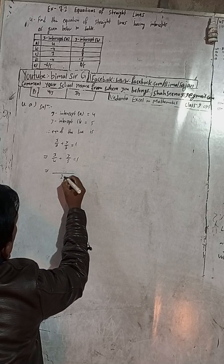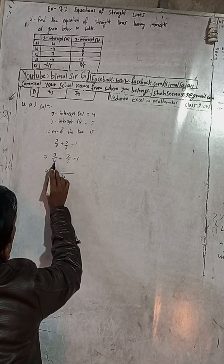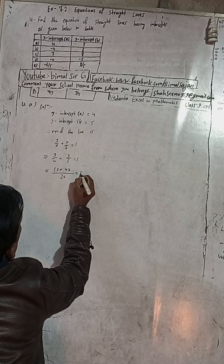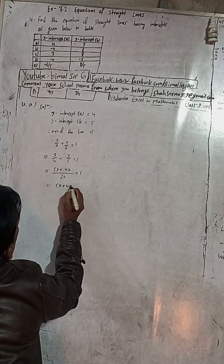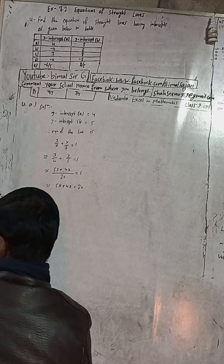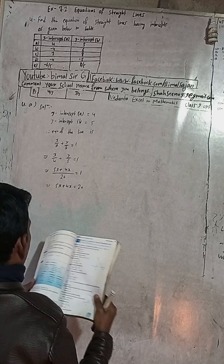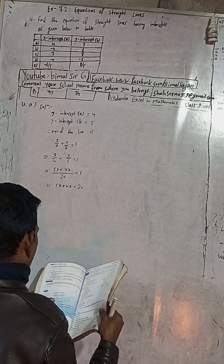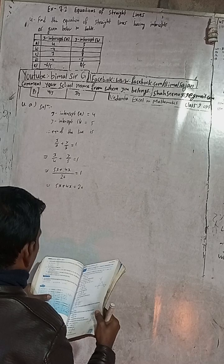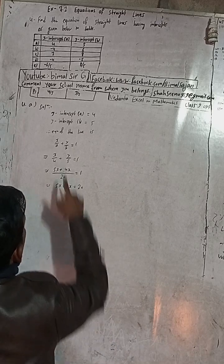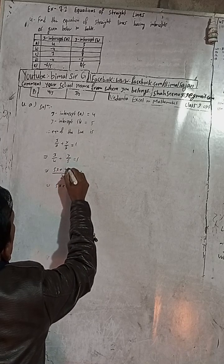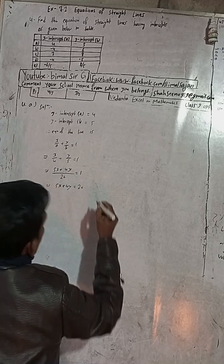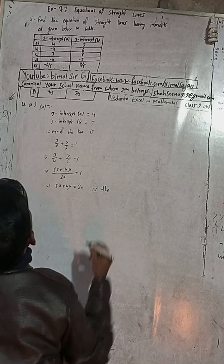5 times x gives 5x and 4 times y gives 4y. So we have 5x + 4y = 20. Note that 4 into y is not x — this is 4 into y, giving 4y. Therefore, 5x + 4y = 20 is the required equation.